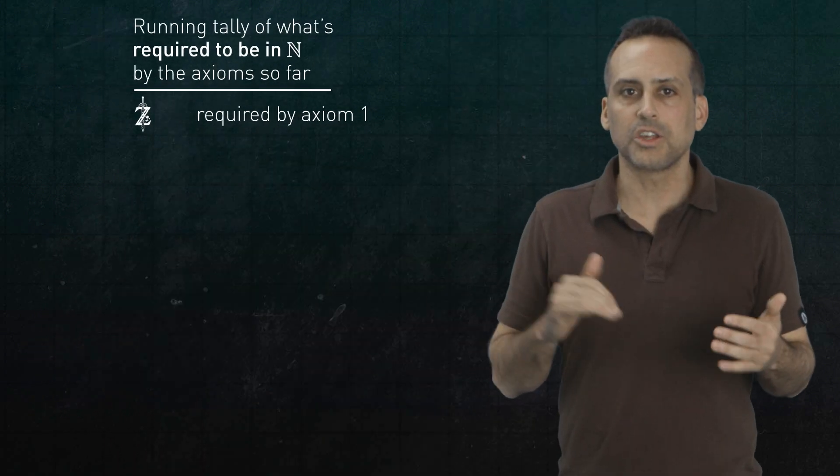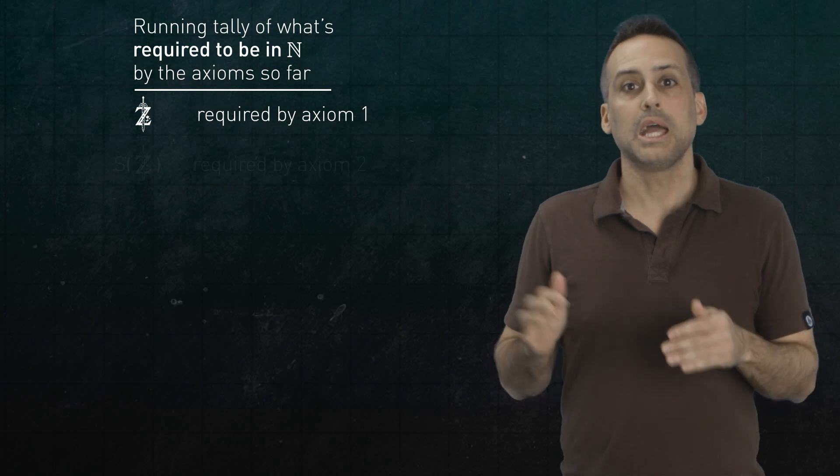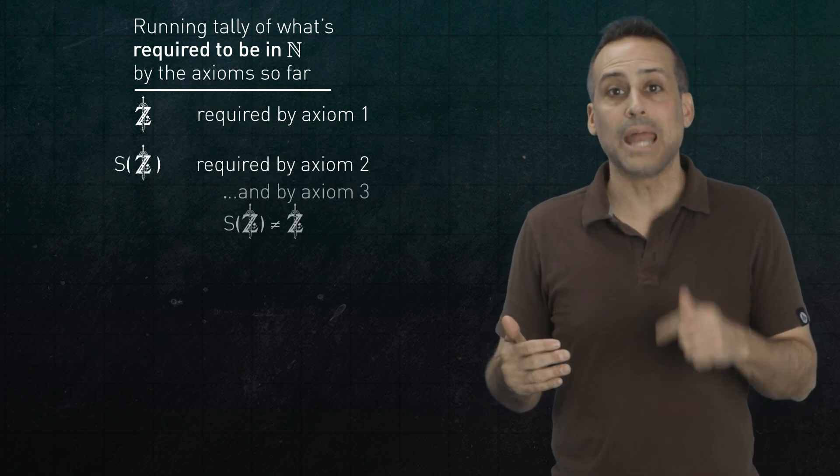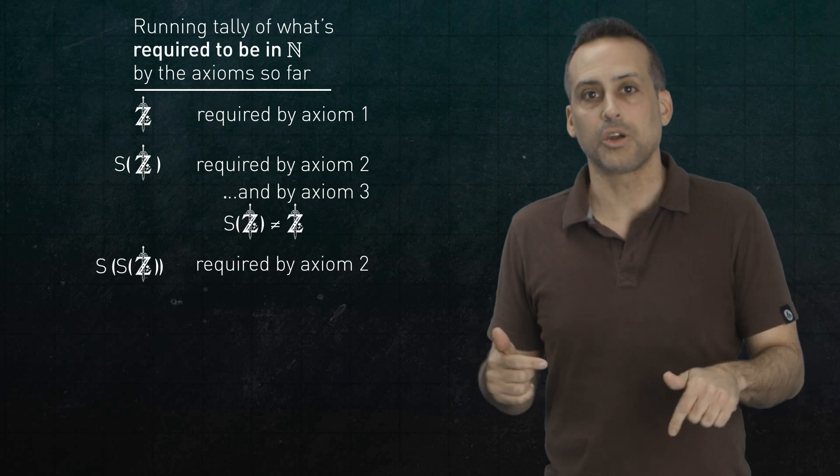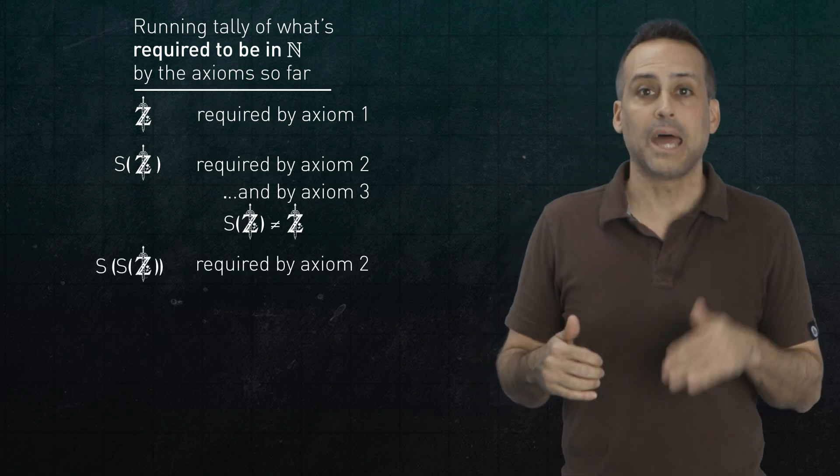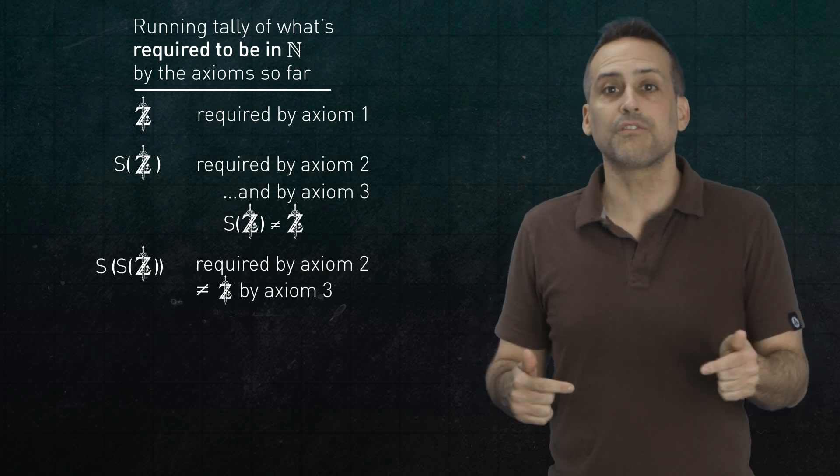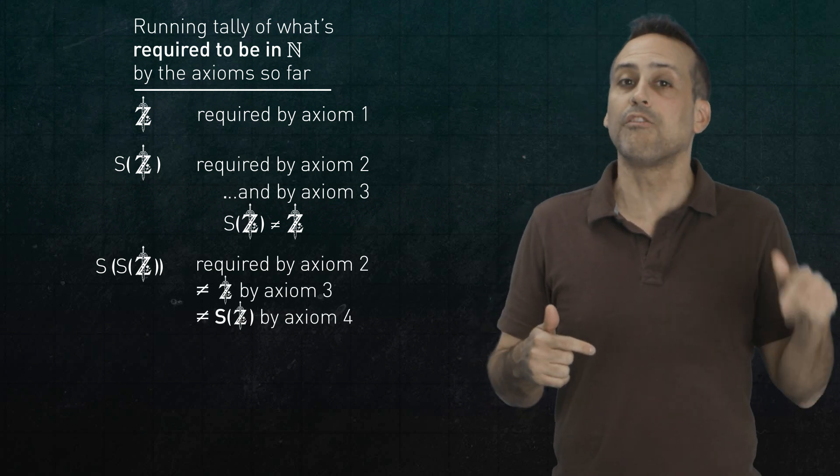Zelda is in our set by axiom 1. s of Zelda is in our set by axiom 2. And it's different from Zelda by axiom 3. s of s of Zelda is in our set by axiom 2. And it's different from Zelda by axiom 3. And different from s of Zelda by axiom 4.